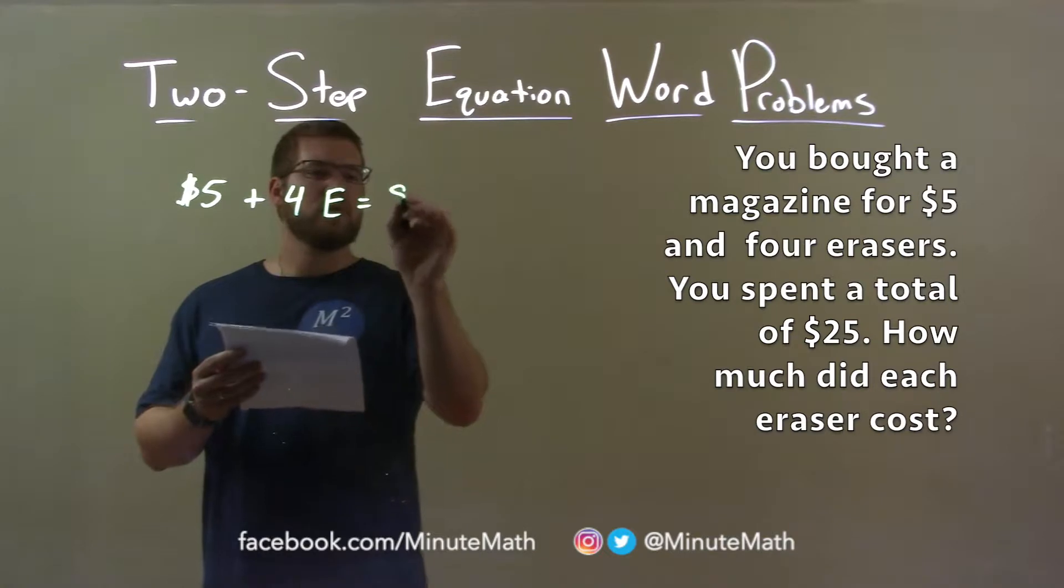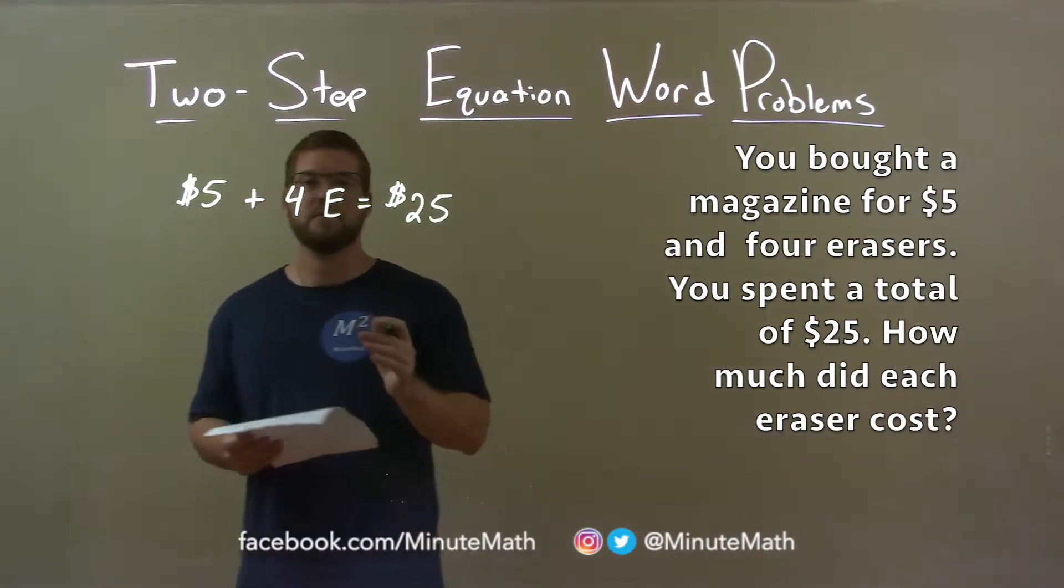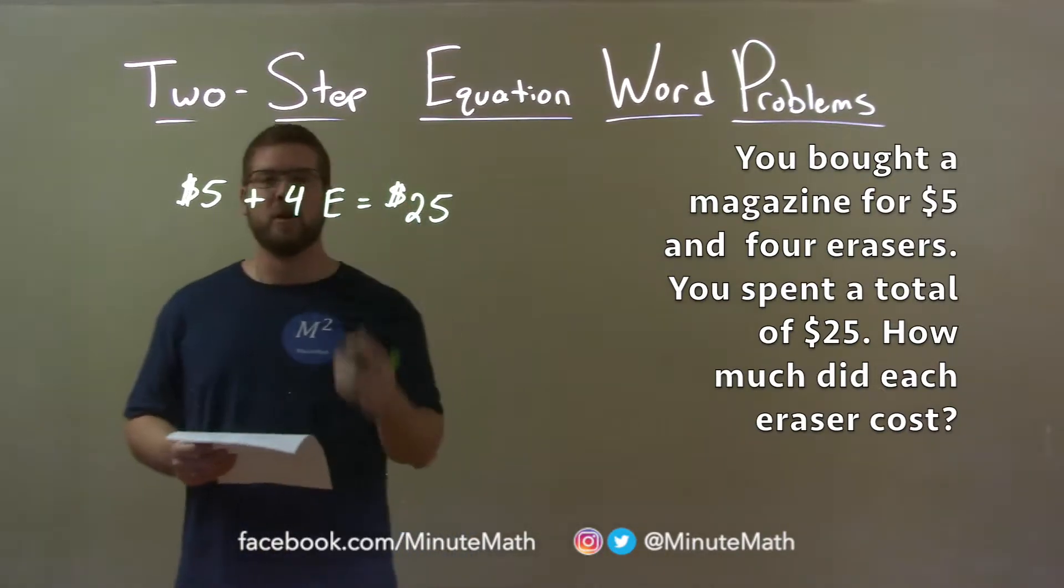We spent a total. All that added up is $25. So, now we define the price of the eraser, our variable E here.